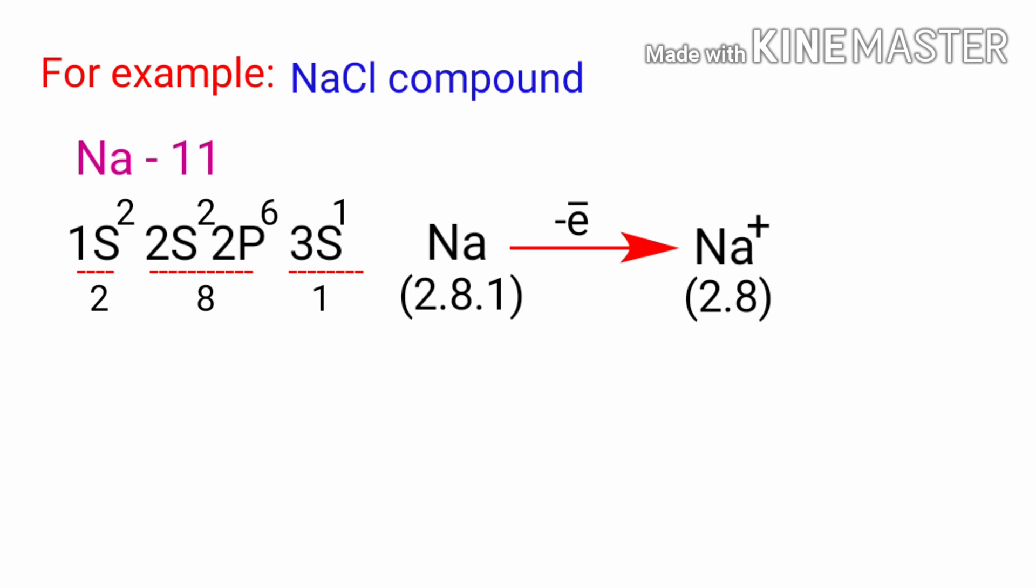In the sodium atom, there is only one electron in its outer electron shell. It takes less energy for sodium to donate that one electron than it does to accept 7 more electrons to fill the outer shell.